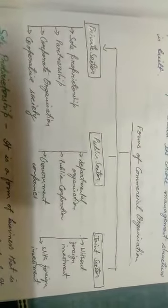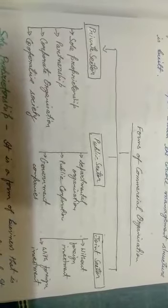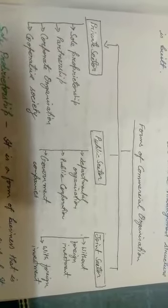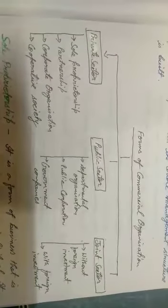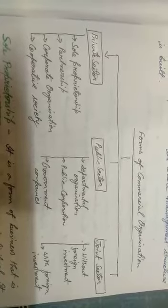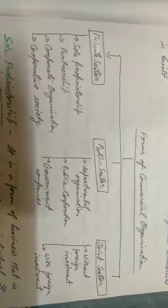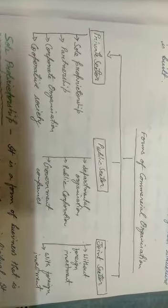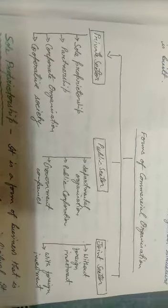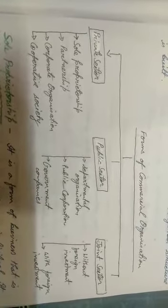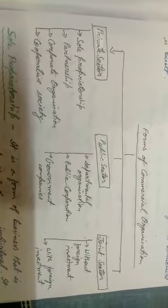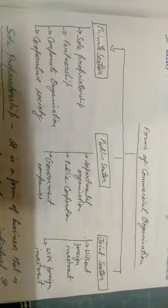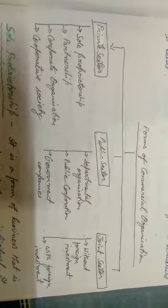Commercial organization is divided into three parts: private sector, public sector, and joint sector. Joint sector is the combination of private and public sector. Private sector is again subdivided into sole proprietorship, partnership, corporate organization, and cooperative society. Public sector is divided into departmental organization, public corporation, and government companies. Joint sector is divided into without foreign investment and with foreign investment.